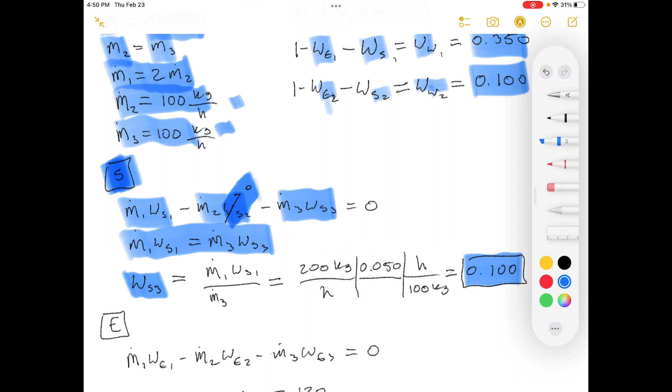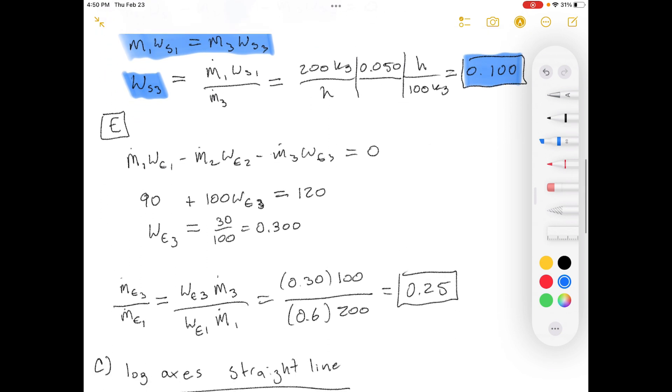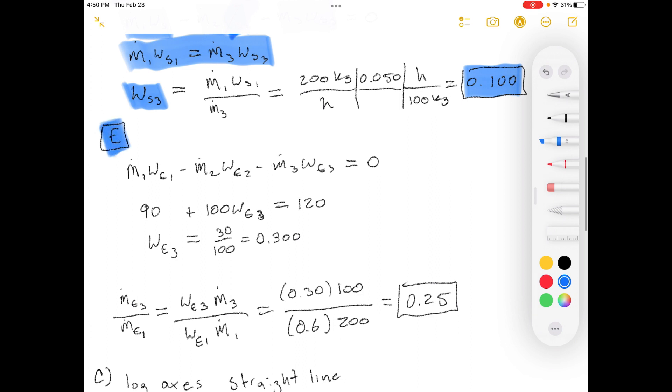Now let's do the mass balance on stream, on the ethanol. Okay. Same kind of thing. We have mass going in equals mass of ethanol going out. Two hundred times zero point six going in. That's 120. Then we have these going out. Ninety going out of the top. And then we need to figure out how much is going out the bottom. We're left with just one variable there. So let's solve for the weight fraction of ethanol going out the bottom. Which is 30 divided by 100. And that equals zero point three.